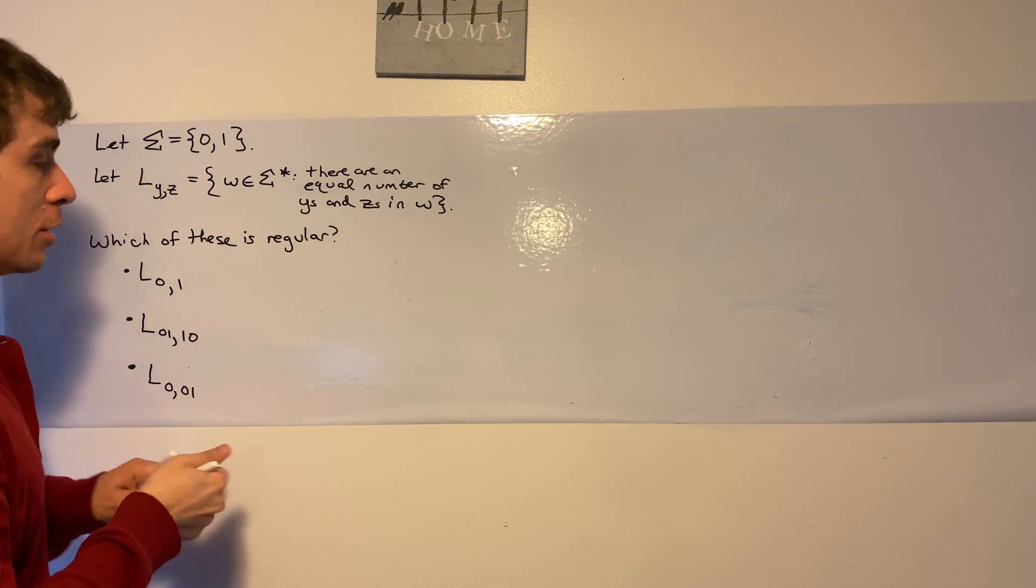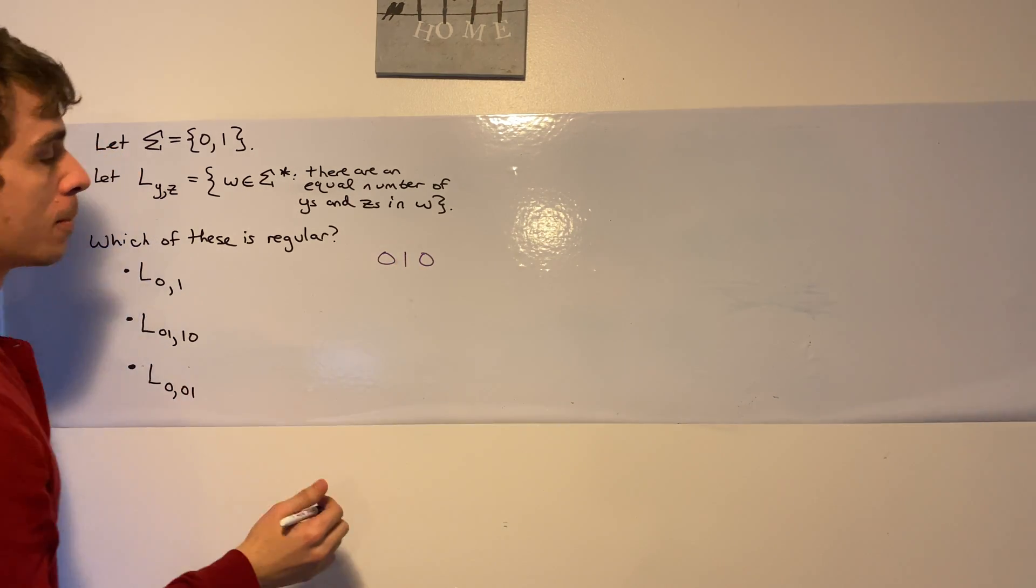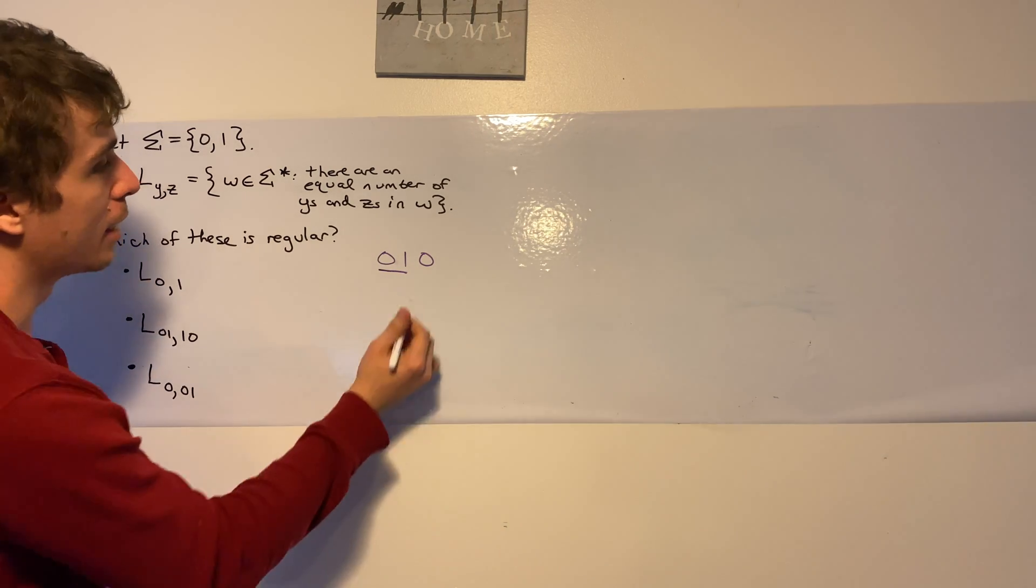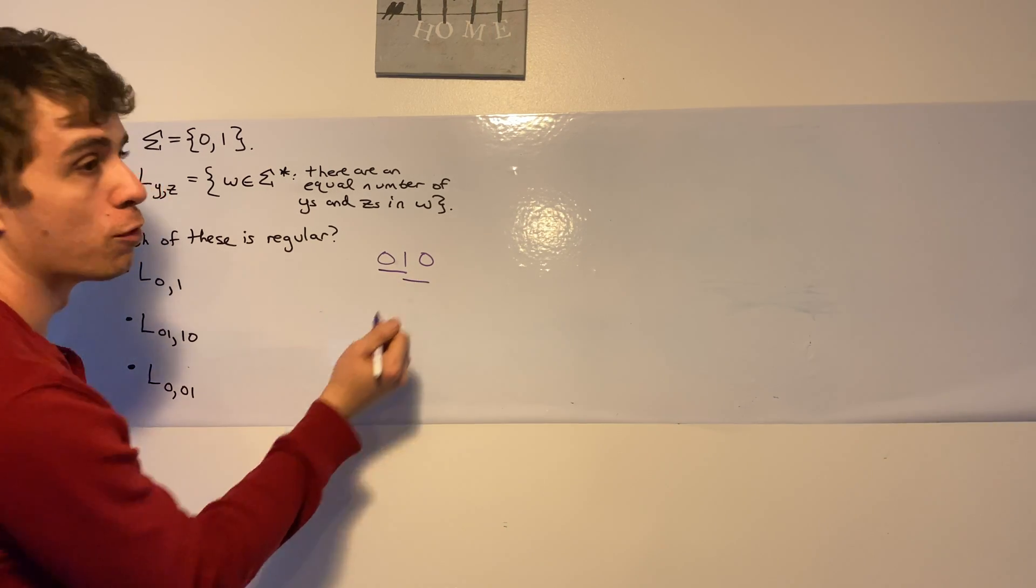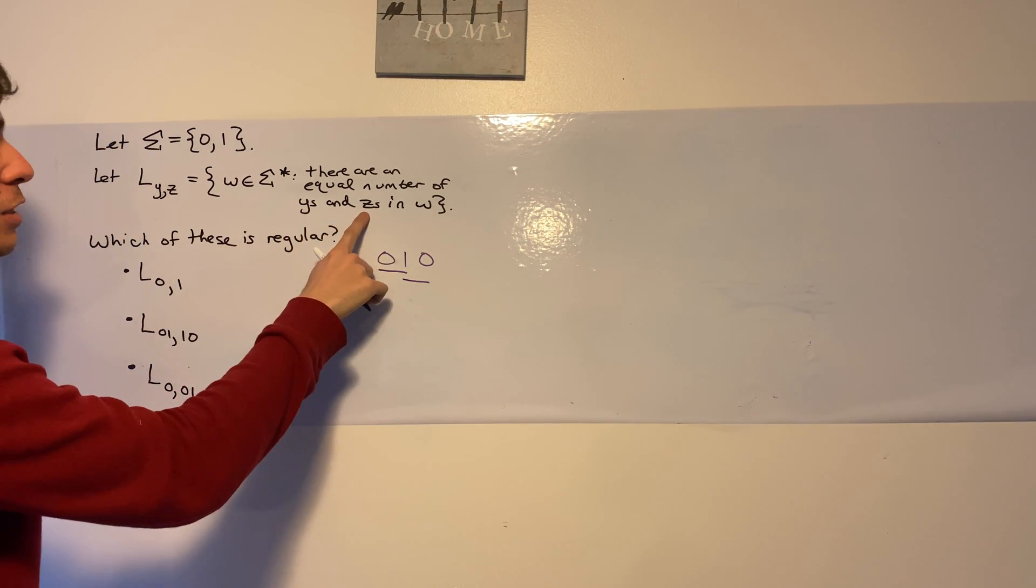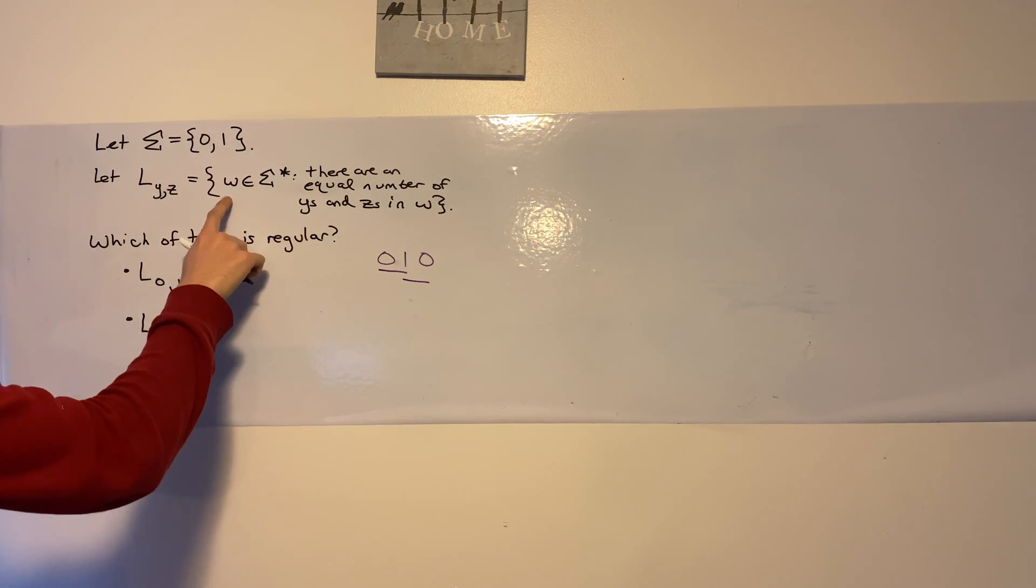So if we look at the string, let's say 0, 1, 0, then the number of 0, 1's in this string is the same as the number of 1, 0's in this string. So if y was 0, 1 and z was 1, 0, then this string would be in this language.